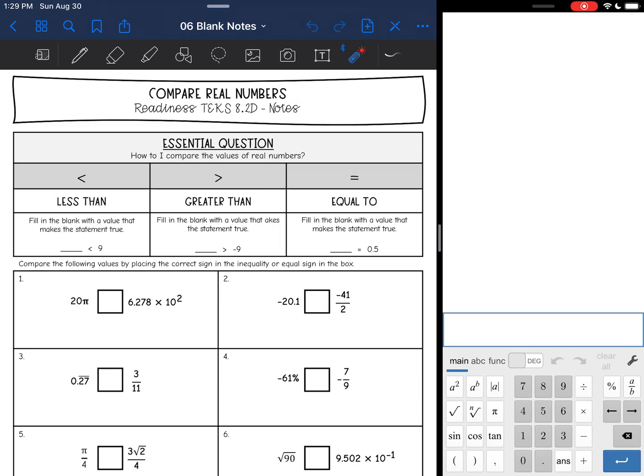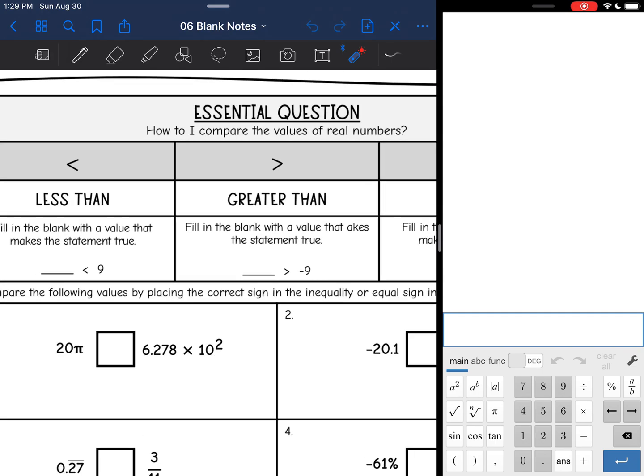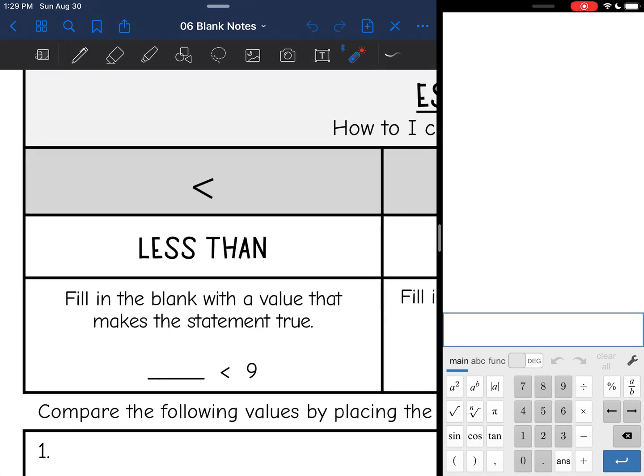So first thing we need to do is review our inequality signs. So let's start with this one right here. This symbol is our less than symbol. So it says fill in the blank with a value that makes the statement true. So if I have nine and this symbol in front of it, that means I want something smaller than nine right here. So there's lots of things that are smaller than nine. An example would be seven is less than nine.